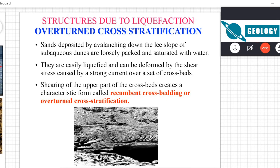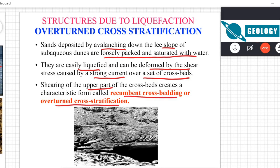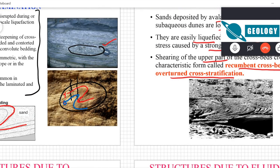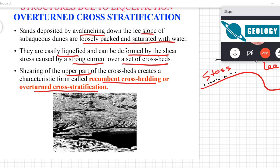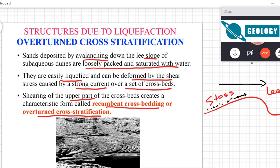Sands deposited by avalanching down the lee slope of subaqueous dunes are closely packed and saturated with water. They are easily liquefied and can be deformed by shear stress caused by strong currents. Shearing of the upper part of cross beds creates a characteristic form called recumbent cross bedding or overturned cross stratification. These subaqueous dunes have a stoss side and a lee side, and sediments are carried from the stoss side and avalanche down the lee side.